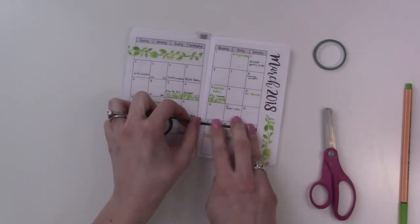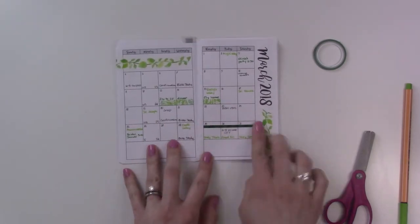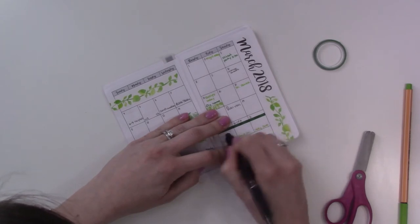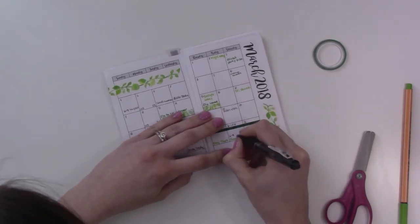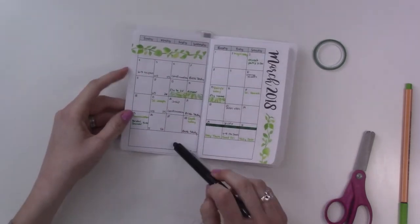And then this skinny washi here, which I also got from Michael's but as a gift, is just delineating the Easter Triduum. So I'm marking the day I have off for Good Friday and then sort of an event we're going to on Good Friday evening.